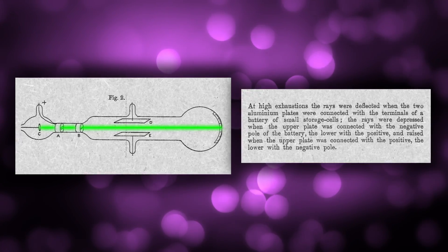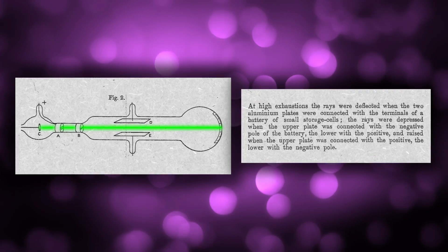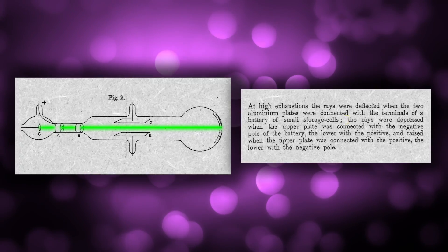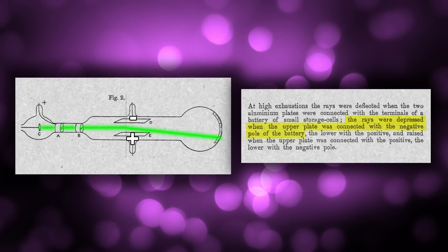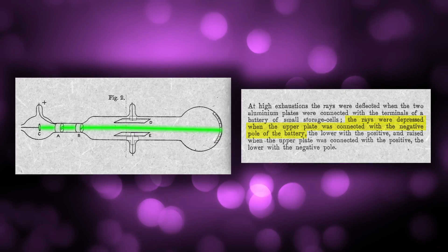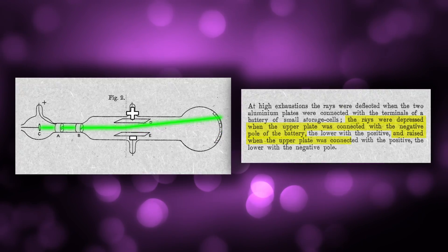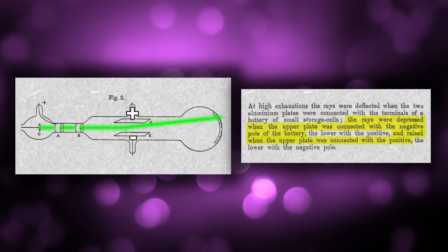When the two aluminium plates were connected with the terminals of a battery of small storage cells, the rays were depressed when the upper plate was connected to the negative pole of the battery, the lower with the positive, and raised when the upper plate was connected with the positive, the lower with the negative pole.